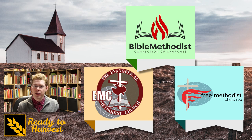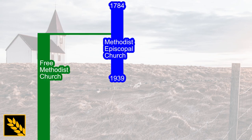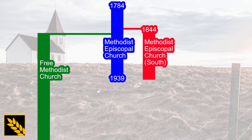Let me briefly cover where they came from. From 1784 until 1939, the largest U.S. Methodist denomination was the Methodist Episcopal Church. In 1860, the Free Methodist Church formed when its founders were removed from the MEC over issues of abolition of slavery and their emphasis of Wesleyan theology.